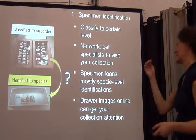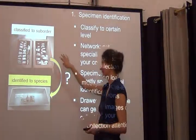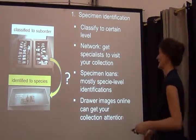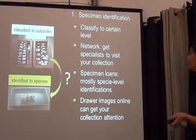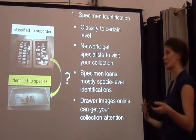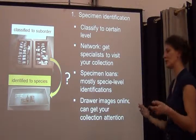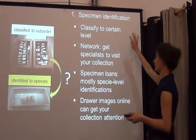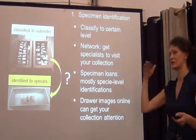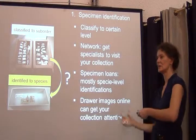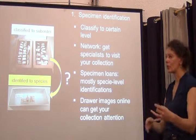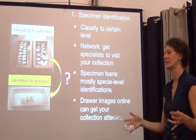The question is: how do you get from classified to suborder — if you're lucky — to species identification? It's a long process and there's no silver bullet. From our experience, one important tip: if you have the staff and knowledge to classify to a certain level, that's a huge first step. Go through new accessions and separate them by order, then suborder, maybe classify to family or whatever level you can deal with.